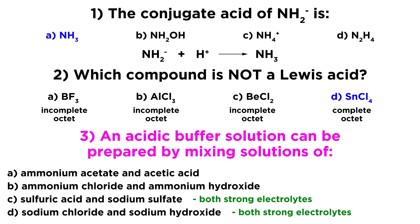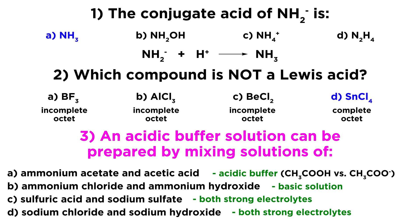Option D again has strong electrolytes — sodium chloride and sodium hydroxide. Hydroxide is a very strong base that won't give us a buffer solution. Looking at option B, we have ammonium chloride and ammonium hydroxide. The ammonium ion is a weak acid, but hydroxide in solution is a very strong base, giving us a basic solution — not what we want. So lastly, option A will work because we have ammonium acetate and acetic acid, giving us an acidic buffer solution with acetic acid in equilibrium with the acetate ion. So option A is the answer, and those are the three questions regarding acids and bases.